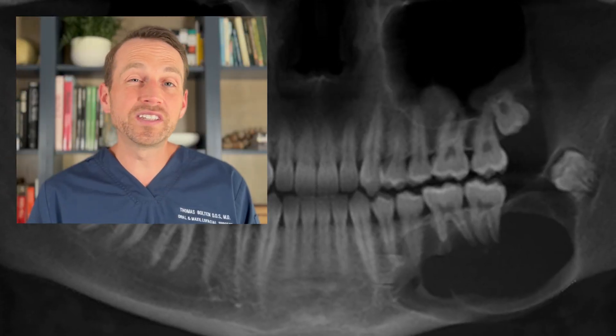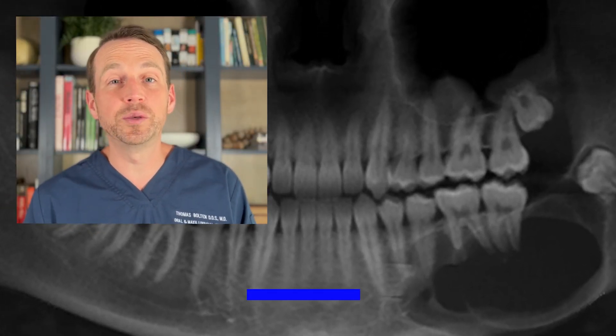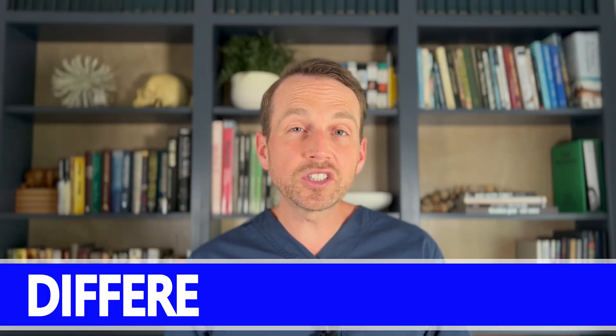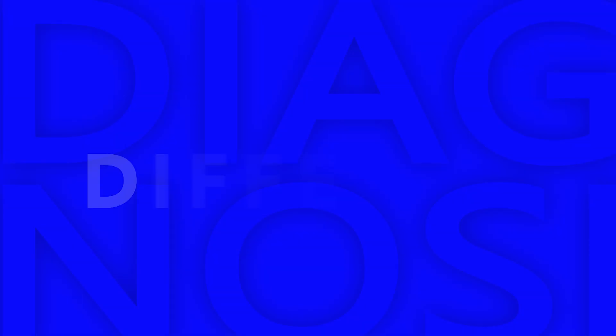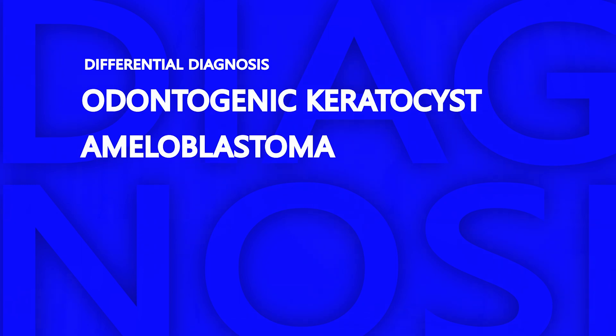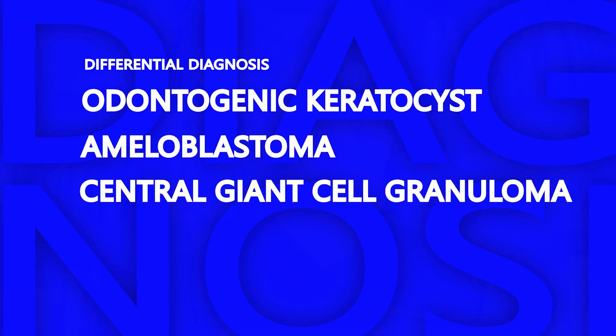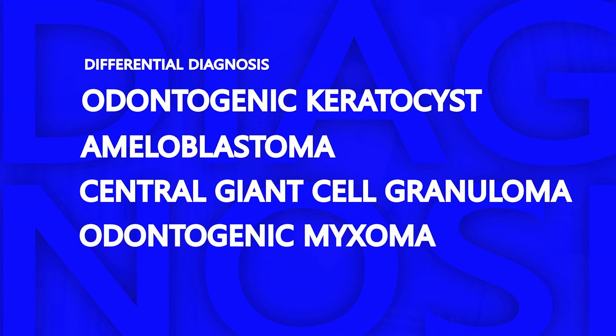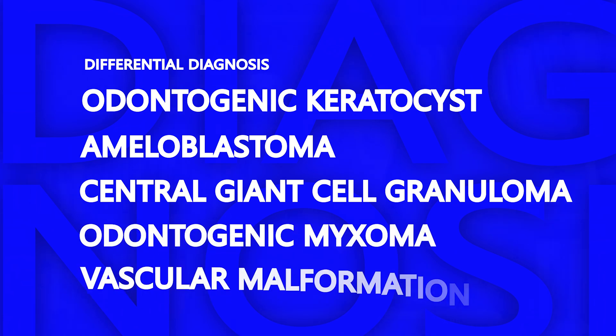So we have a 16-year-old male with a large growth in his left mandible — so what do we do? First, we need to start thinking about what this growth could potentially be. This is called the differential diagnosis. The differential diagnosis for a radiolucent expansile mass in the mandible includes an odontogenic keratocyst, ameloblastoma, central giant cell granuloma, myxoma, and a vascular malformation.